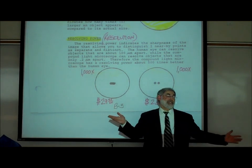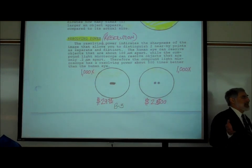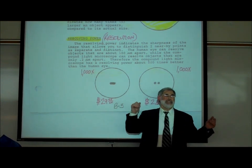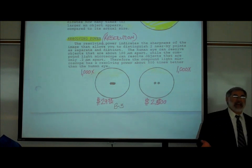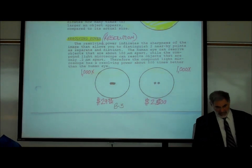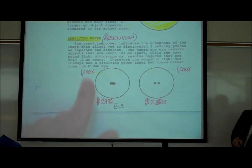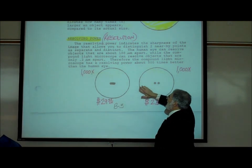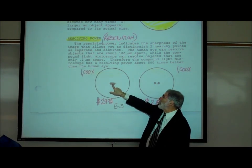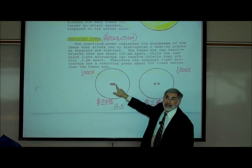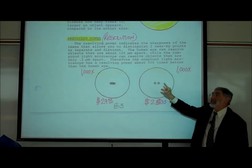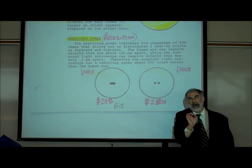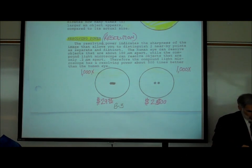If both microscopes magnify 1,000 times, how can one sell for $30 and the other for $2,500? There has to be a difference in quality, and that difference is the resolving power, or resolution. They both magnify the same amount, but the cheaper one produces a blurry image, while the good quality one produces a sharp image.